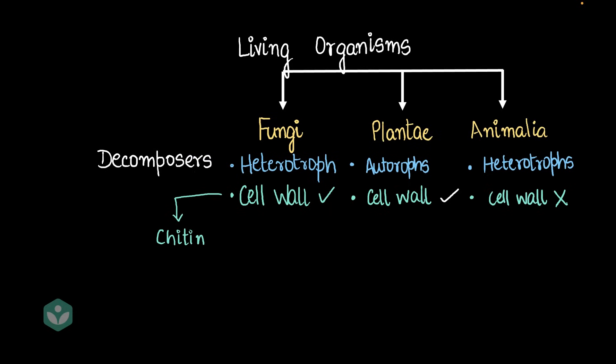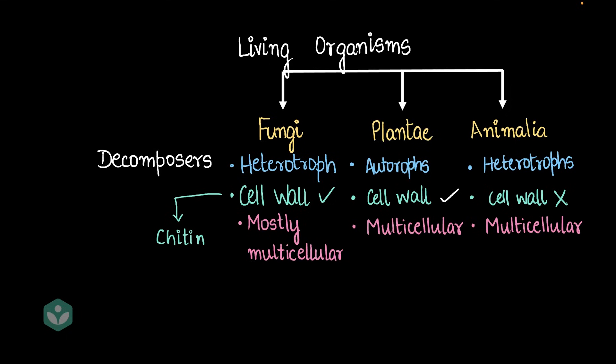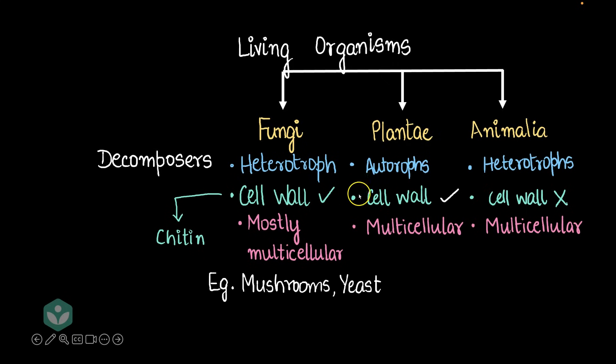Chitin is a little different from cellulose. Now, animalia is always multicellular, plantae is always multicellular, and fungi is mostly multicellular — you do have unicellular fungi as well. Examples of fungi are mushrooms and yeast: mushrooms are multicellular, and yeast is unicellular.